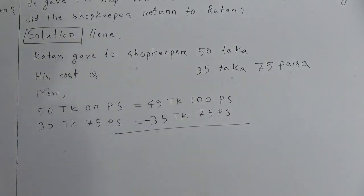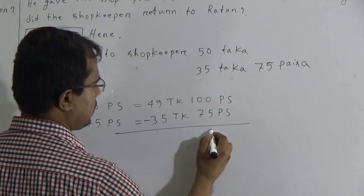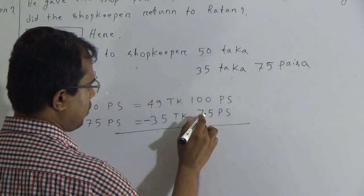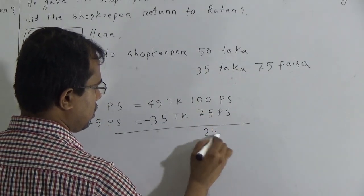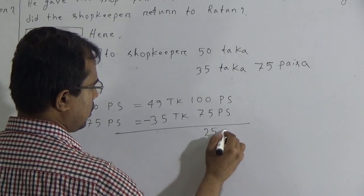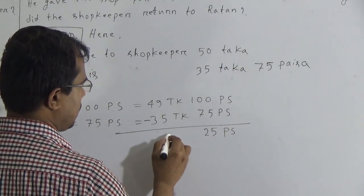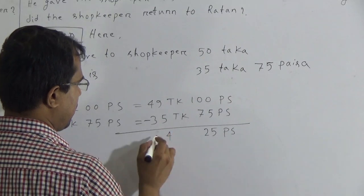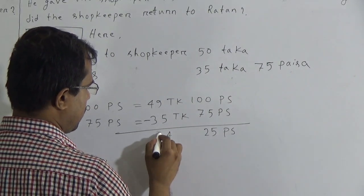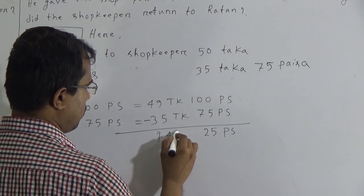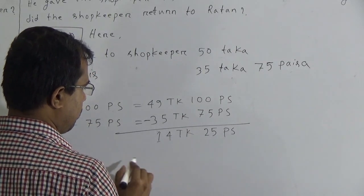Now: 0 minus 5 not possible, consider it as 10 minus 5 equals 5; carry 1 adds with 7 making 8, then 10 minus 8 equals 2, so 25 Paisa. Then 9 minus 5 equals 4, and 4 minus 3 equals 1, so 14 Taka. That means the answer is 14 Taka 25 Paisa.